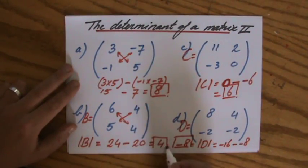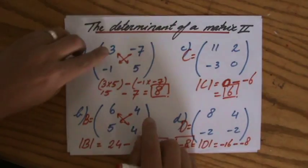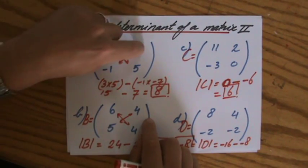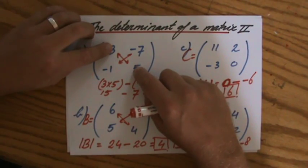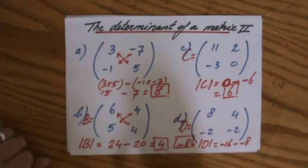Okay. So the determinant of a matrix, AD minus BC. You multiply those diagonals and you subtract them. But you're going to start here, take away those two. Multiply. Alright.